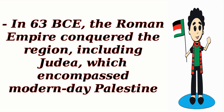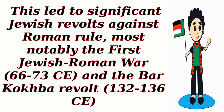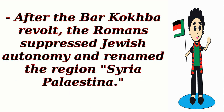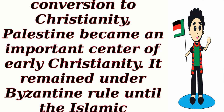In 63 BCE, the Roman Empire conquered the region, including Judea, which encompassed modern-day Palestine. This led to significant Jewish revolts against Roman rule, most notably the First Jewish-Roman War and the Bar Kokhba Revolt. After the Bar Kokhba Revolt, the Romans suppressed Jewish autonomy and renamed the region Syria-Palestina. Following the Roman Empire's conversion to Christianity, Palestine became an important center of early Christianity, and remained under Byzantine rule until the Islamic conquest.